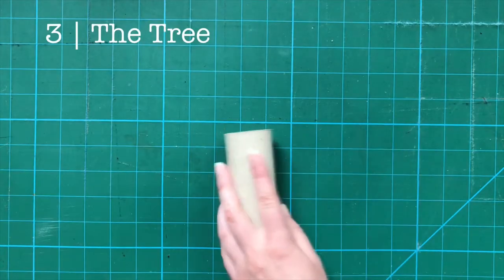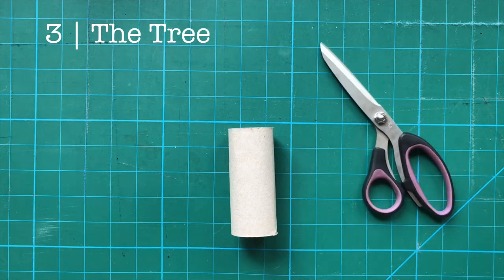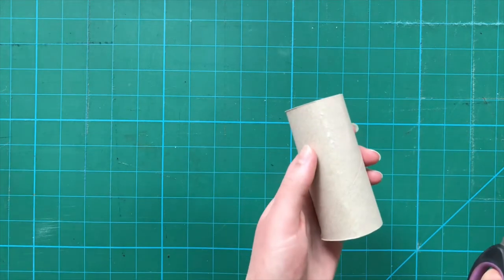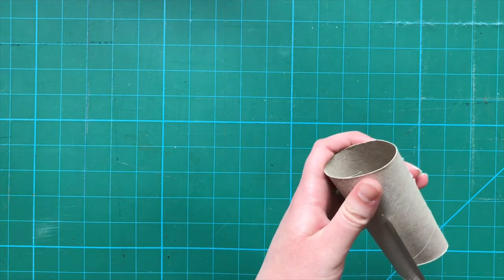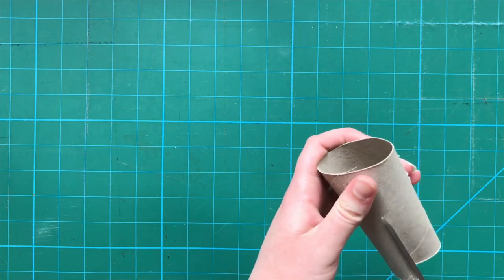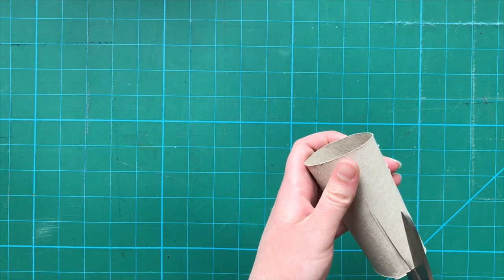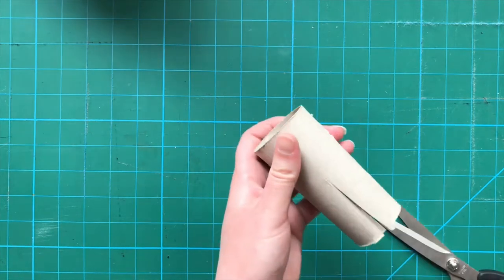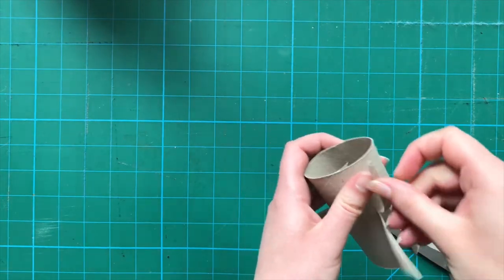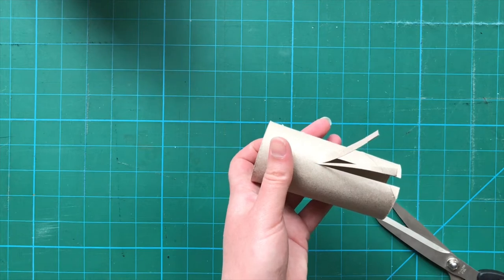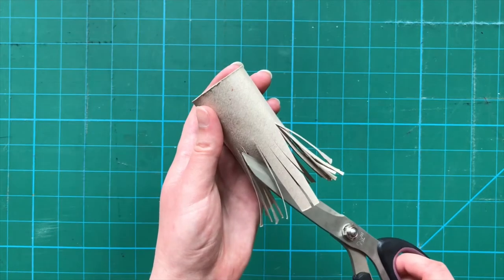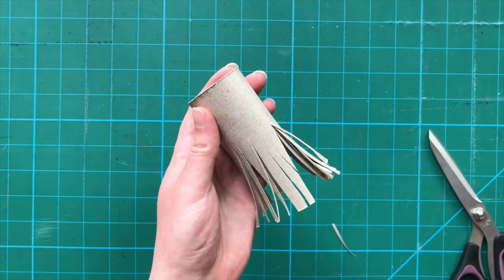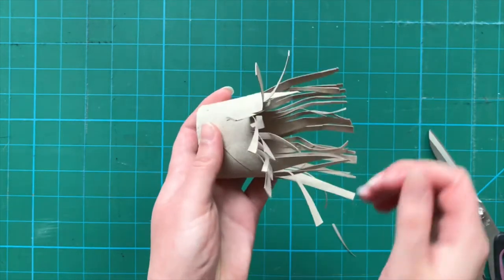Number three, the tree. We'll start with one toilet paper roll and scissors. Simply cut strips to about halfway and do this all the way around. Give it a scrunch and you can add some treats for interest.